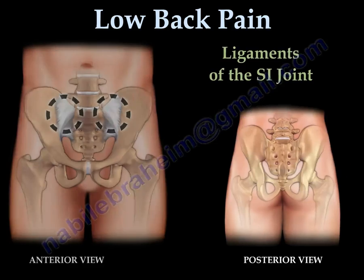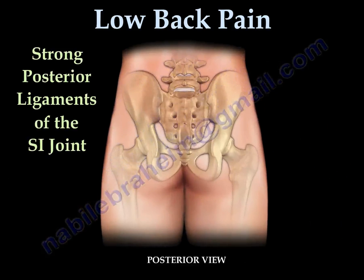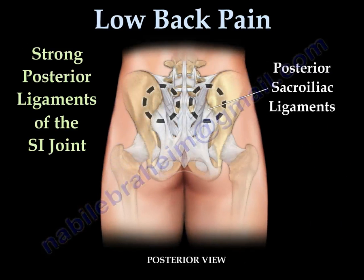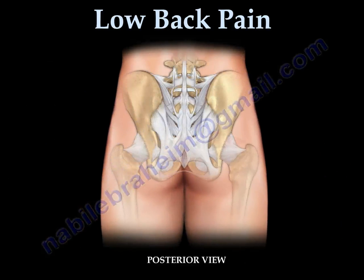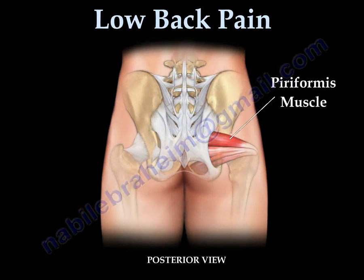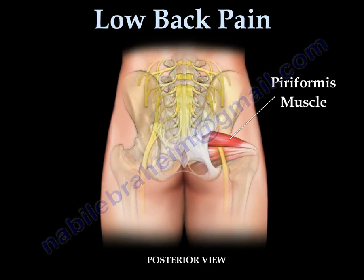The most important ligaments of the SI joint are the strong posterior SI ligaments. The piriformis muscle is attached to the trochanter of the hip. The sciatic nerve lies in front of the piriformis muscle.